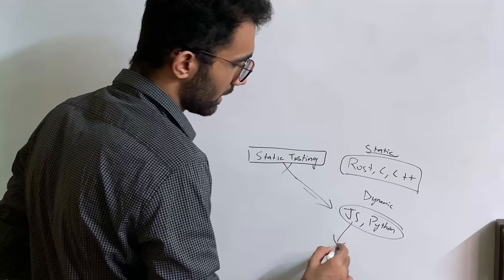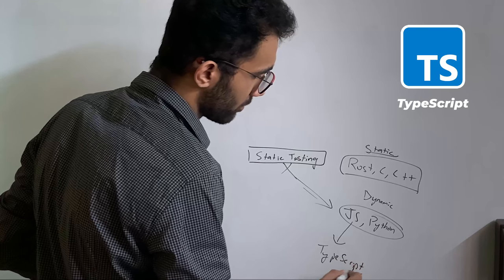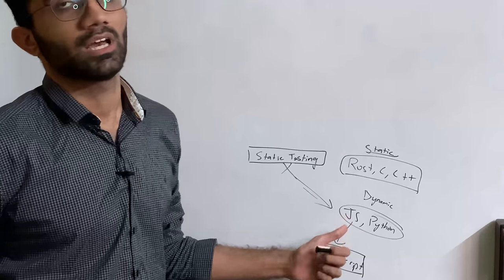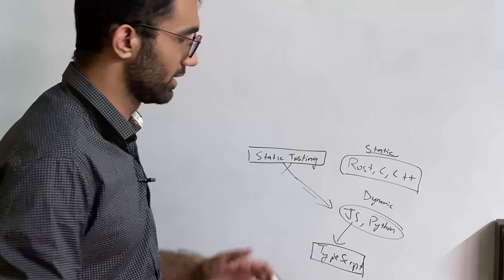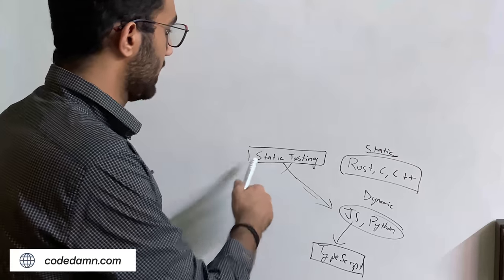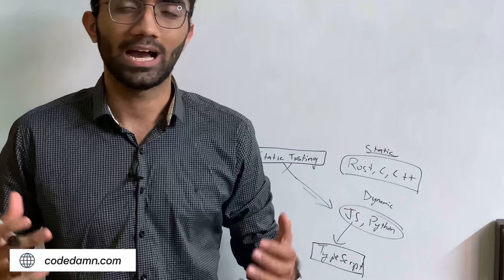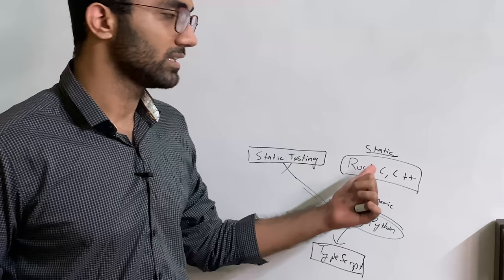At least in JavaScript, you can implement this by using TypeScript instead, which is very useful and helpful because once you include static testing with JavaScript, you get the benefits of dynamically typed language but the security of statically typed language as well to a certain extent. Static testing should be your first priority. If you have a small JavaScript code base, it's a good idea to migrate into TypeScript. If you want to write in Rust, C, C++, that's a good choice as well.